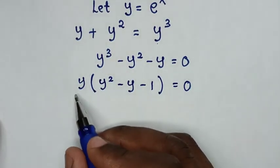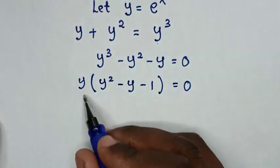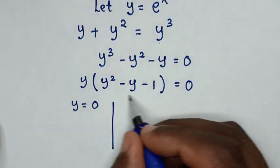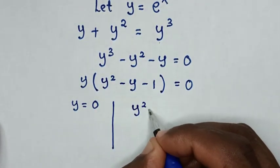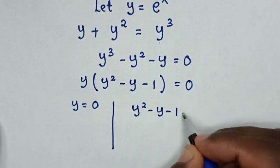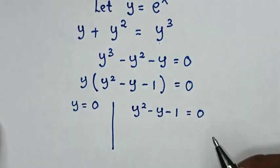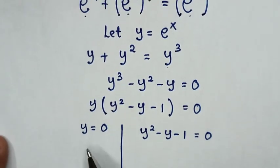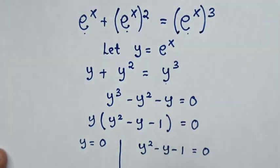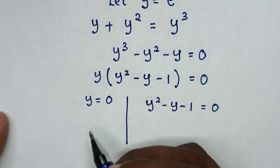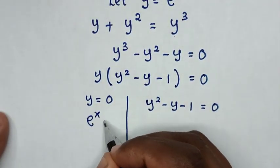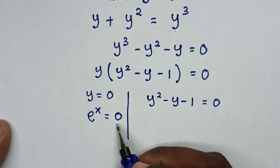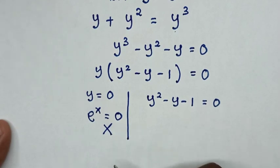From this equation, we have two solutions. The first solution is y equals 0, and the second solution is y squared minus y minus 1 equals 0. From the first solution, since we let y equal to e power of x, it would mean e power of x equals 0. But e to the power of any number is always greater than 0, so this solution is rejected.